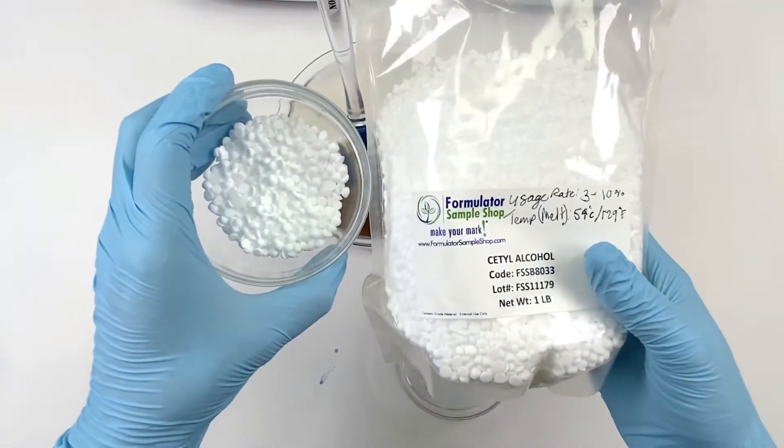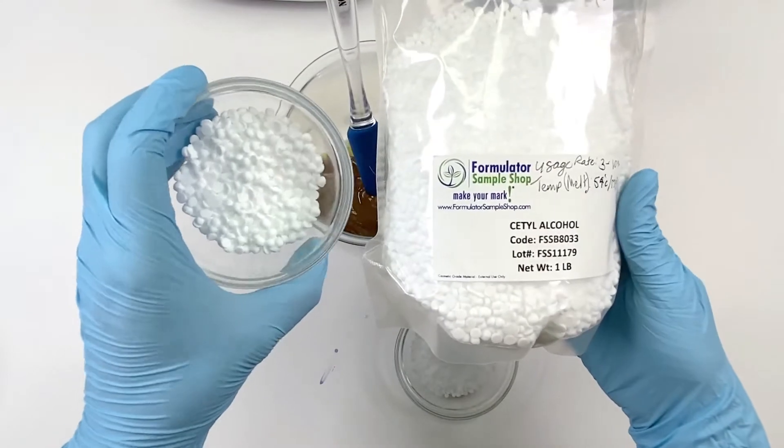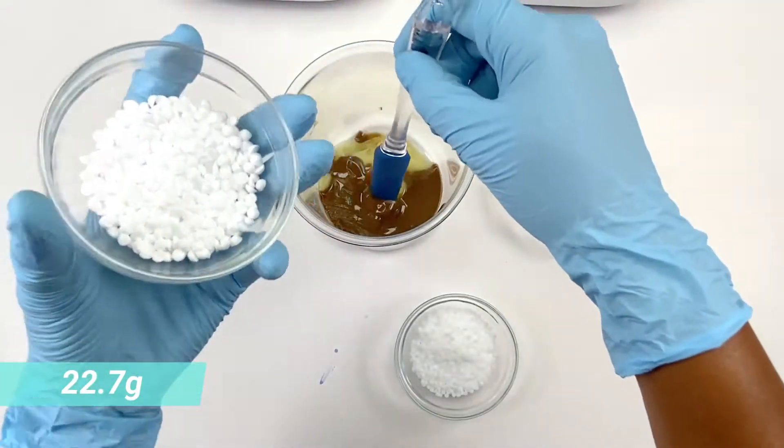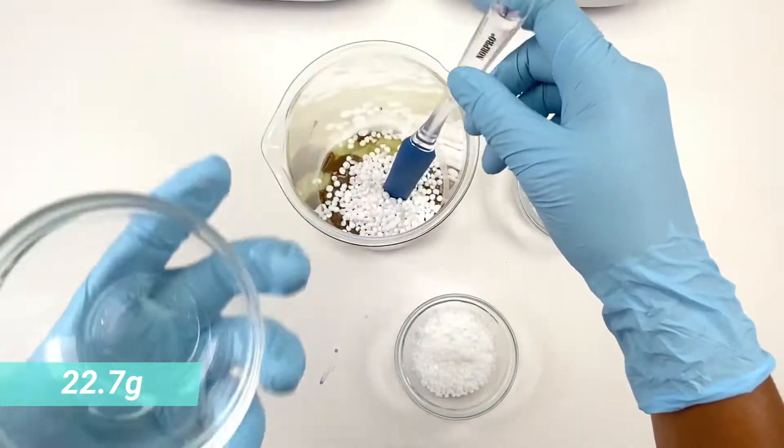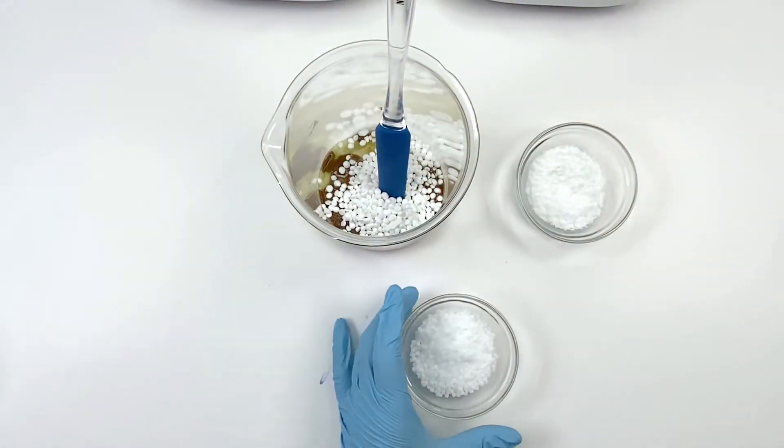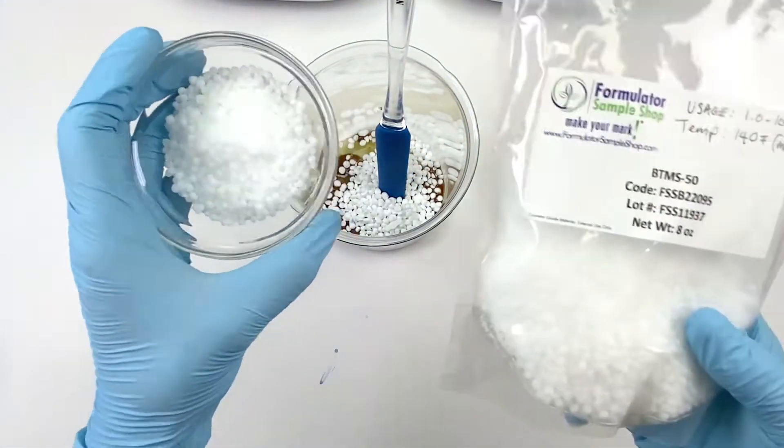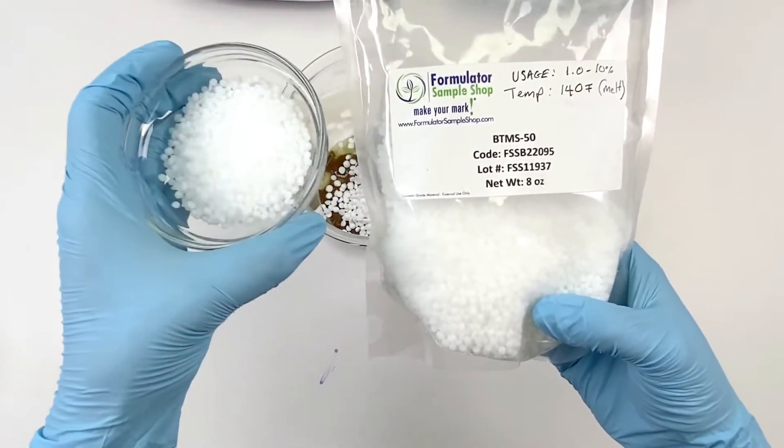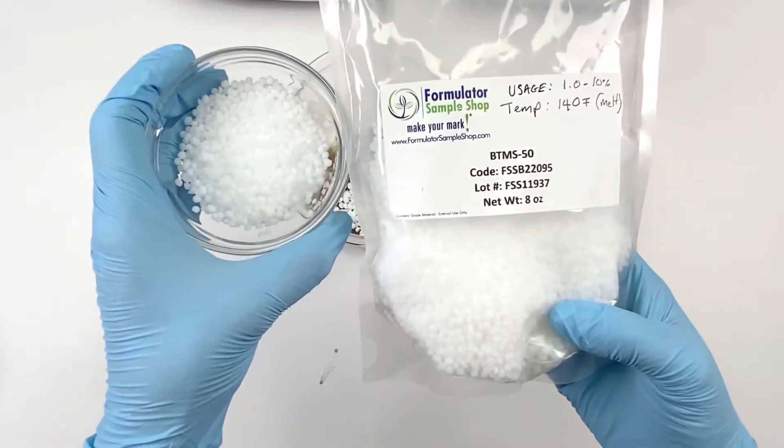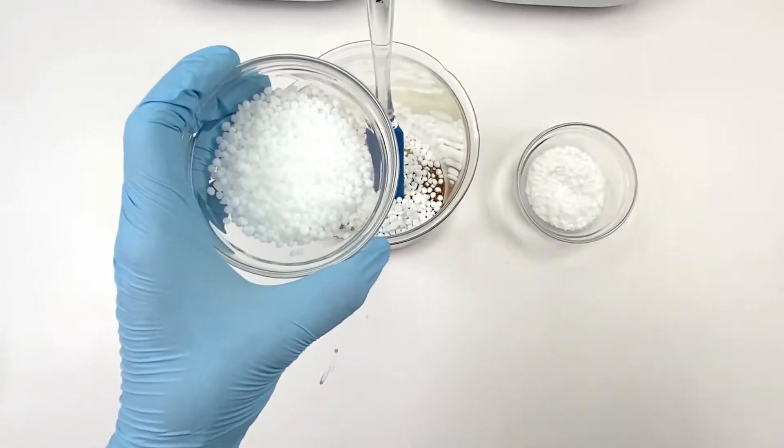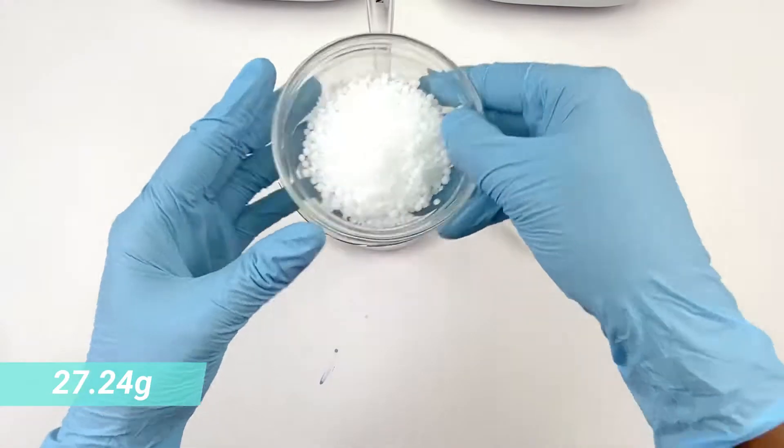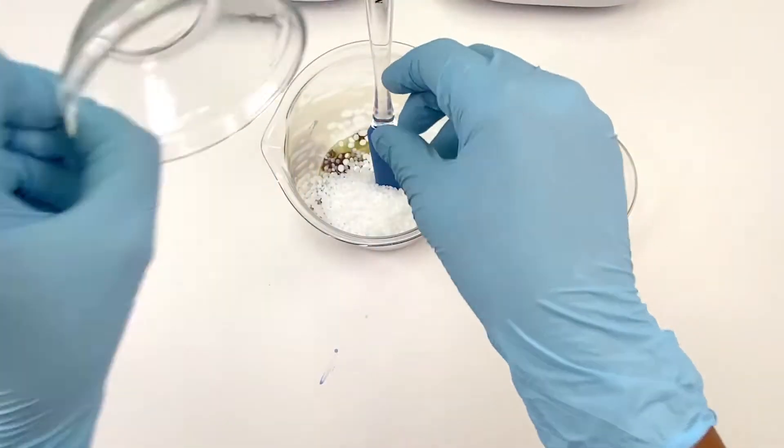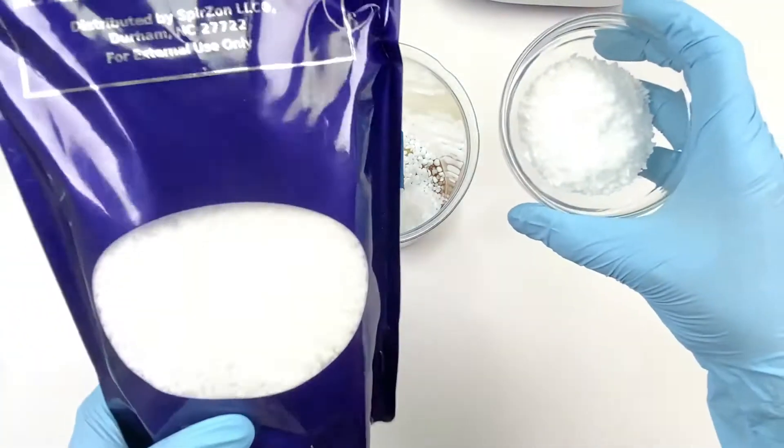Here we have cetearyl alcohol. You have 22.7 grams of cetearyl alcohol. This is BTMS 50. This is for the added conditioning and it's also cationic, so it helps with the feel and the slip. We have 27.24 grams of BTMS 50.